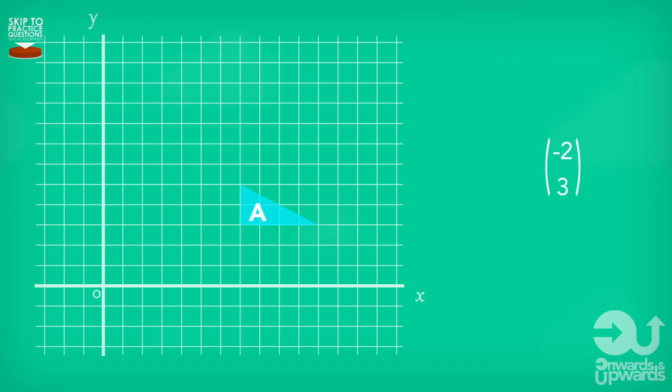Another slightly longer but more reliable way of doing these questions that also avoids any risk of drawing the shape incorrectly when we do the final shape is basically just to use tracing paper. Using this method, we draw the whole original shape. Then we move our starting point exactly like we did before according to the column vectors. But this time we move the whole tracing paper.